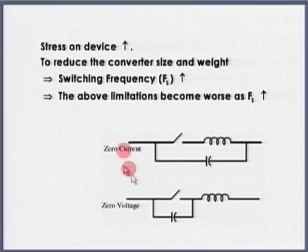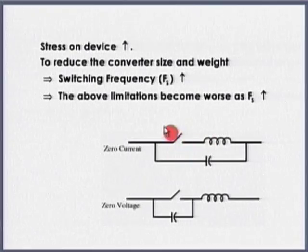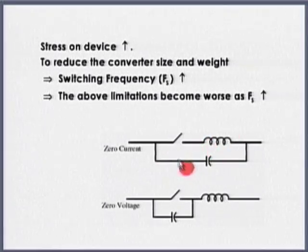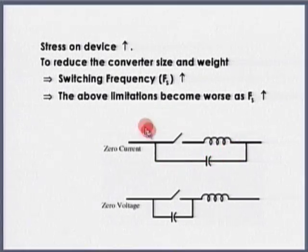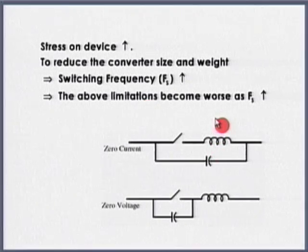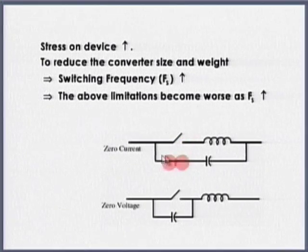They can be represented something like this. I have connected a small inductor. Prior to closing the switch, there was no current flowing. When I close this switch, because of this inductor, current has to gradually increase. So this could be a zero current switch. I have just shown a small part of the circuit; there are other parts which are a bit complicated. So this is zero current switching.